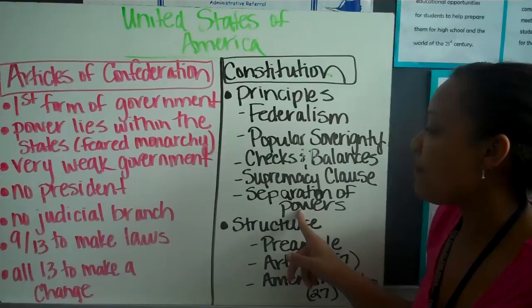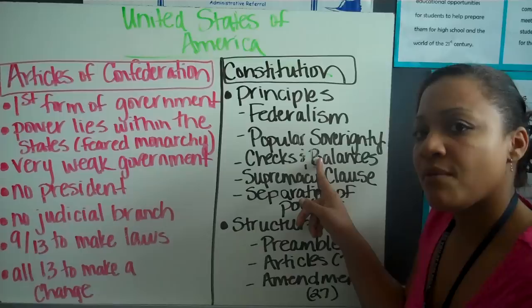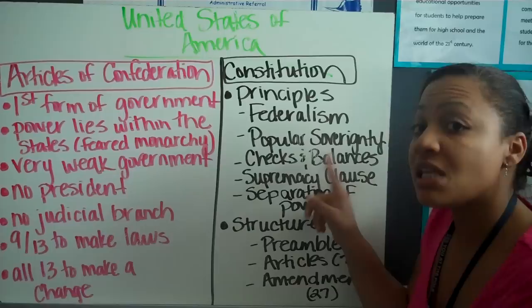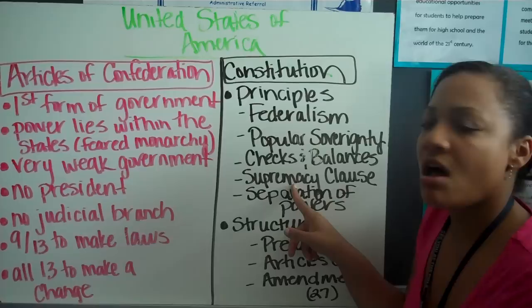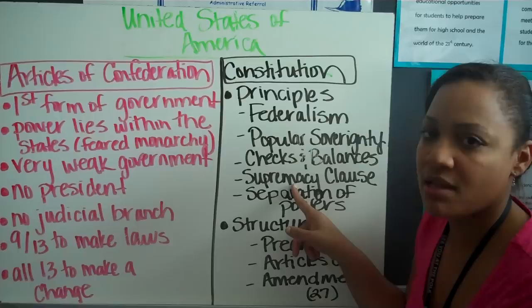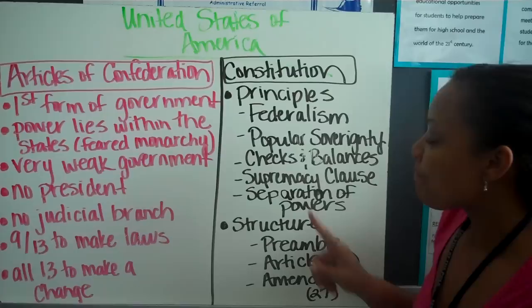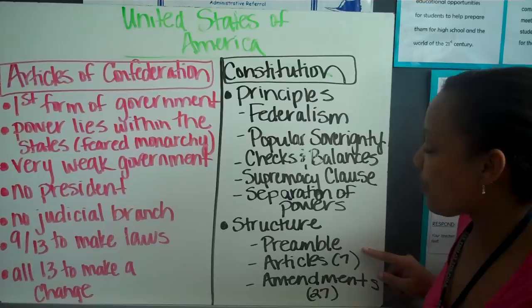Checks and balances and separation of powers go with the three branches of government — each branch checks the others, so no single branch is more powerful than another. For example, President Obama at this time wanted to take military action against Syria but couldn't do so without the approval of Congress. The Supremacy Clause states that no one is above the Constitution, not even our leaders — the president can be impeached for wrongdoing, and states are secondary in power to the federal government.